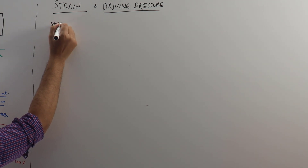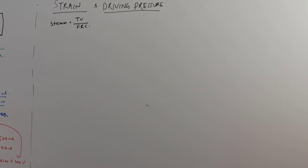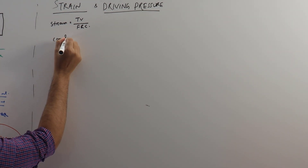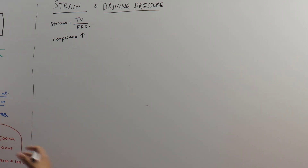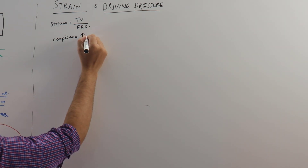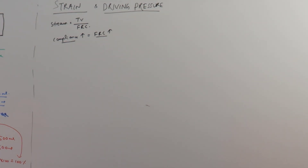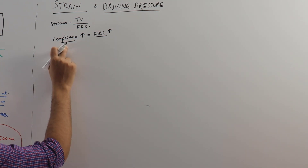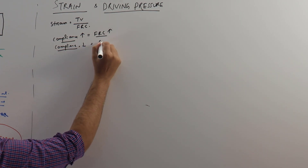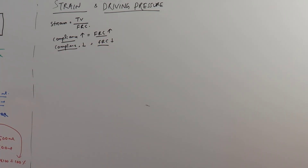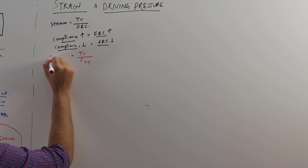Strain is equal to tidal volume divided by FRC. One thing to remember about compliance: when compliance is high, the lung is not stiff — it is very expandable and flexible — and in that situation the FRC will be high. As compliance decreases, the FRC also decreases. So we can replace FRC with compliance, making strain equal to tidal volume divided by compliance — this is the global lung strain.